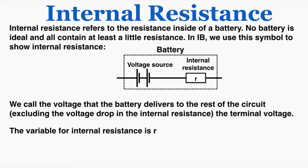In IB we use this symbol to show internal resistance. We've got this battery, and this dotted line represents the barrier of the battery. Anything inside of that dotted line is inside of the battery, which we symbolize with those cell symbols, and it also contains an internal resistance, which we symbolize just like any other resistor with that resistor symbol with the lowercase r. We call the voltage that the battery delivers to the rest of the circuit the terminal voltage.